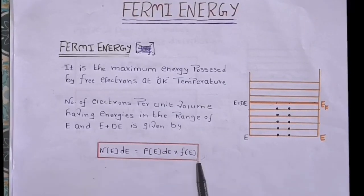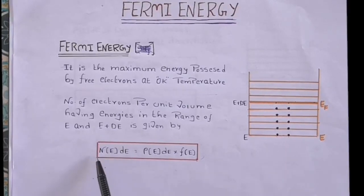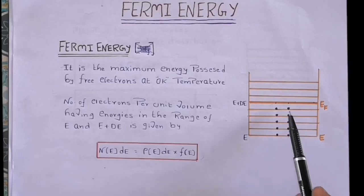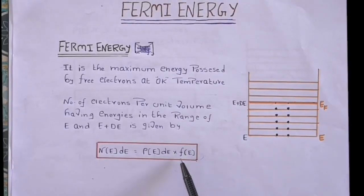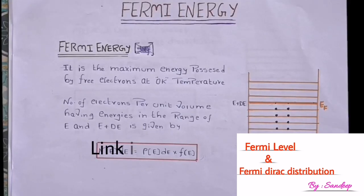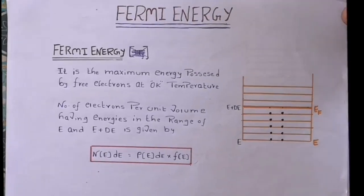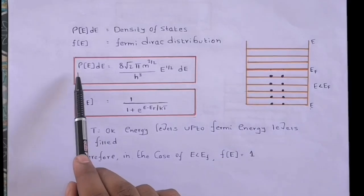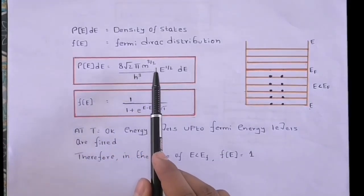To find the number of electrons per unit volume, you need to multiply the density of states by the Fermi factor. I already explained about the Fermi function, Fermi level, and Fermi factor in my previous video — you can watch it by clicking the link in the description box. The expression for density of states is: ρ(E)dE = (8√2 π m^(3/2)) / h³ × E^(1/2) dE.